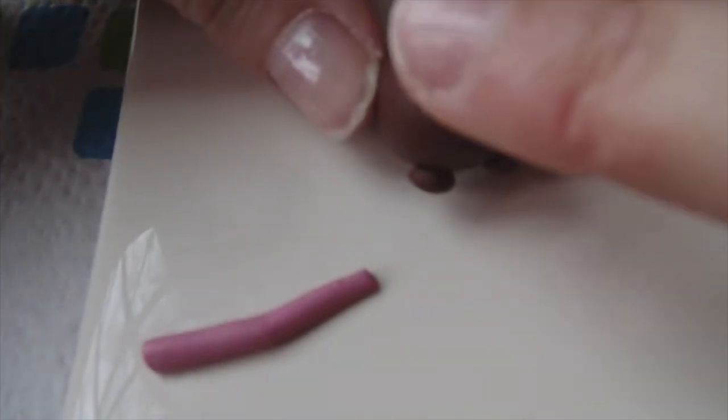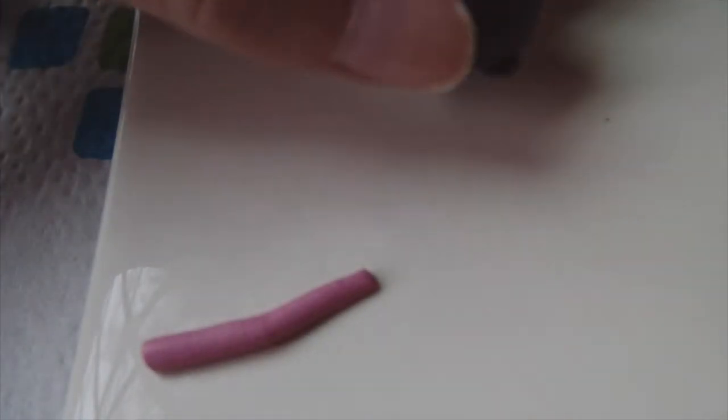Now take another piece of light pink clay, shape it into a ball, and put it at the back of your hamster to make the hamster's tail.